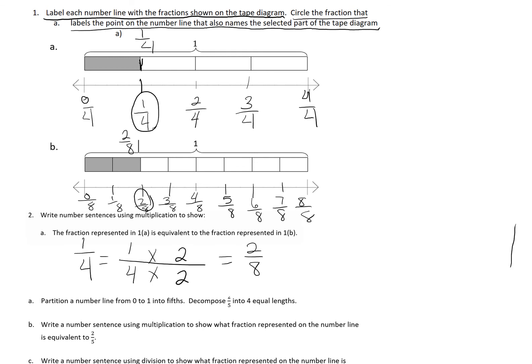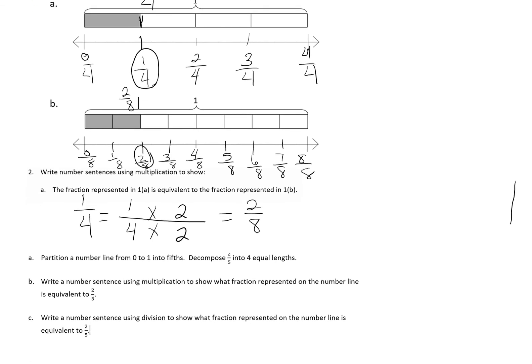If we go down, this part was a section that was a little tricky during class. It says partition a number line from 0 to 1 into fifths. So chunking it, I need to partition a number line going from 0 to 1, and then I need to go in fifths. When I label it, we have 1 fifth, 2 fifths, 3 fifths, 4 fifths, and 5 fifths would be our one whole at the end.